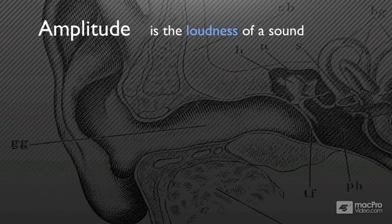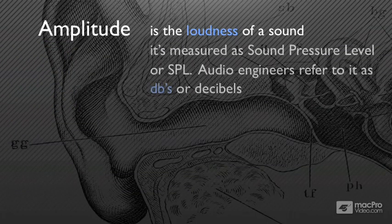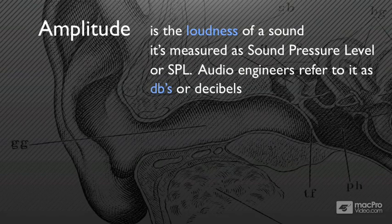Amplitude — this is basically the loudness of a sound. It's measured as SPL, sound pressure level. These are those little devices that you see sitting on top of front of house mixers, guys that are mixing in clubs and stuff. And when the police come to shut them down, they show them the SPL meter, and if it's like under 110, they can stay running.